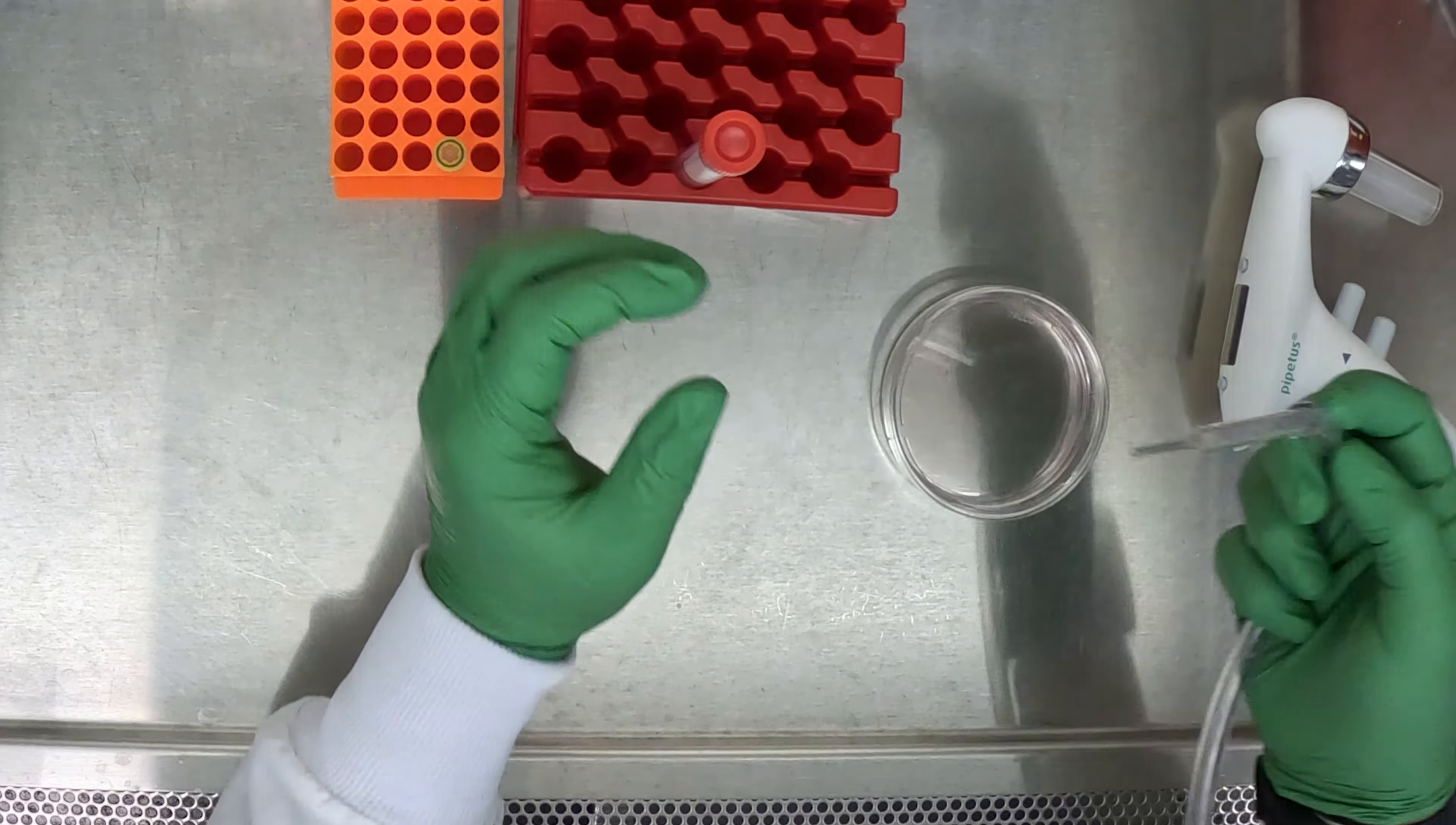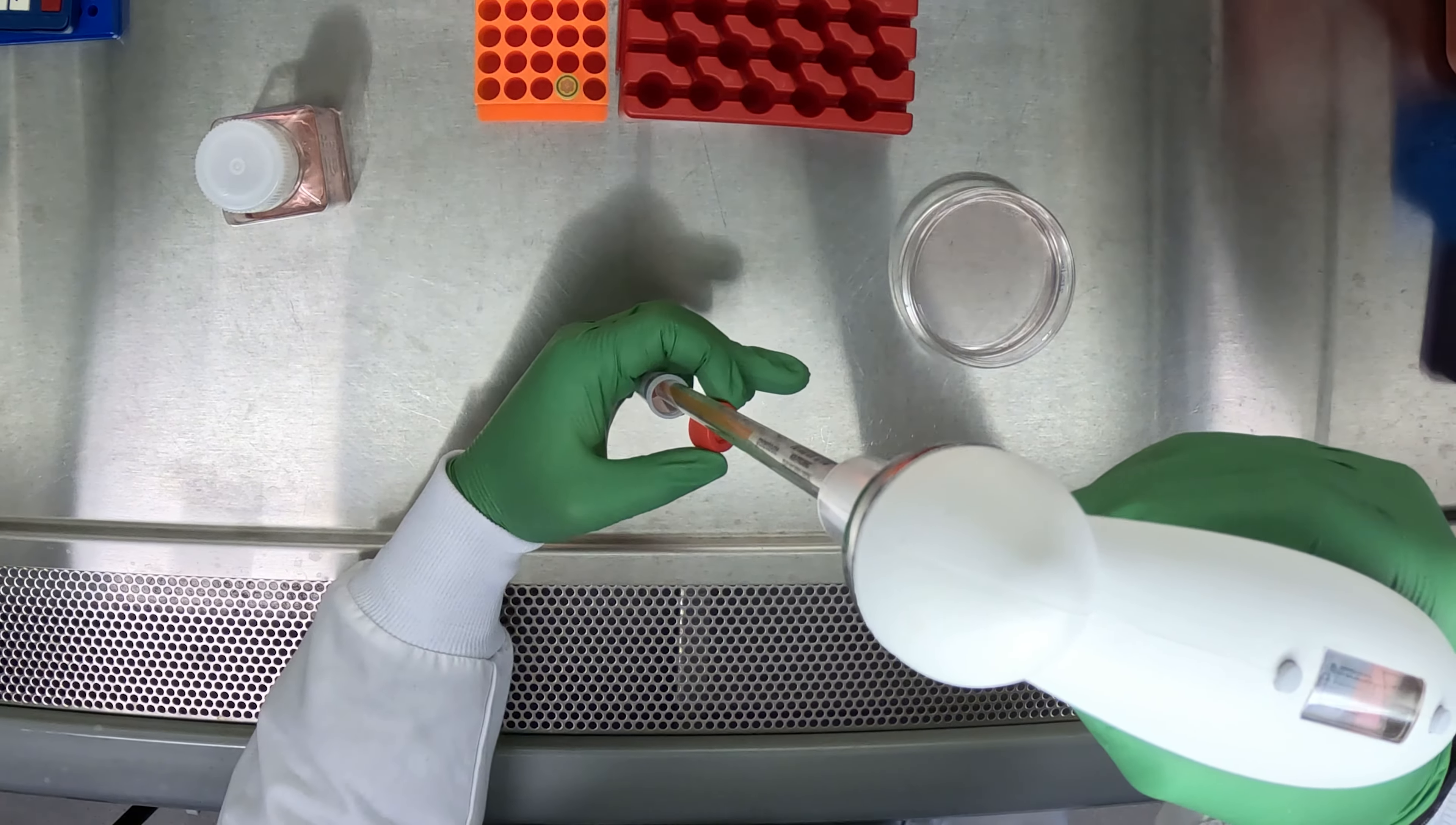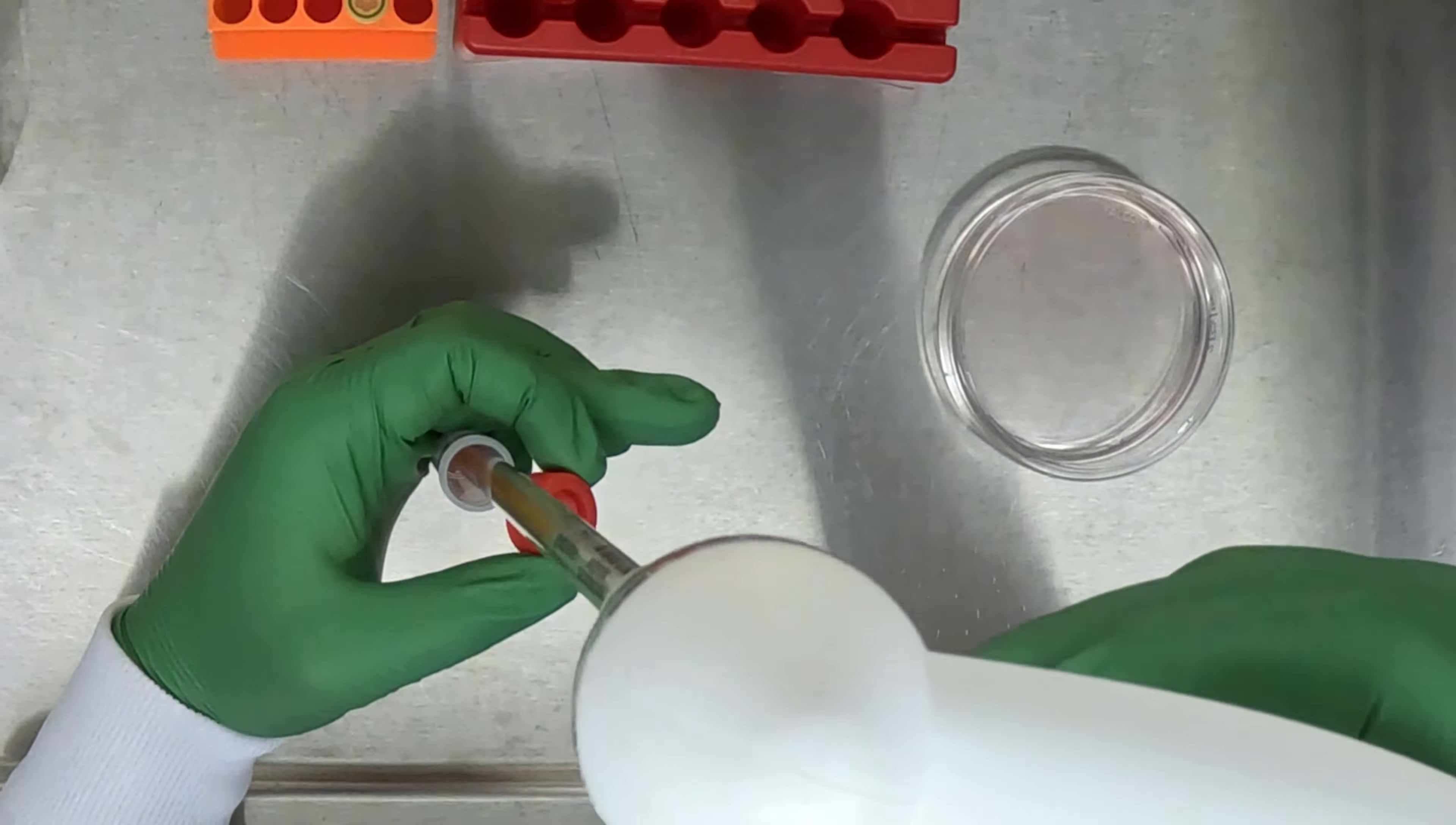Once we have aspirated off the supernatant, we will now resuspend our cell pellet in 5ml of M-Teaser plus rock inhibitor media. After adding the 5ml of rock inhibitor media to your cell pellet, gently resuspend the cells by triturating up and down three times, trying to avoid bubbles if possible. After resuspending your cells in the 5ml of fresh M-Teaser plus rock inhibitor media, transfer the entire volume to your prepared recovery plate.